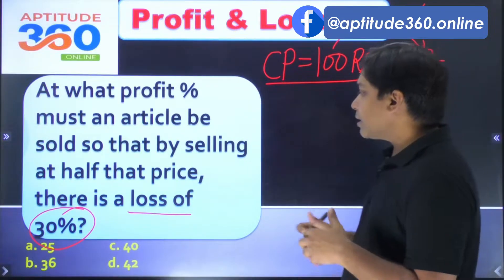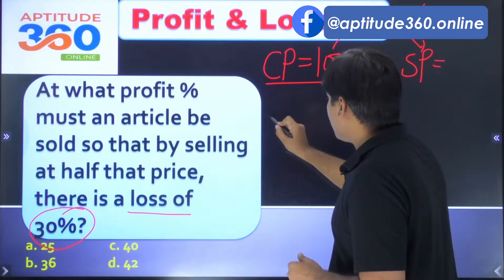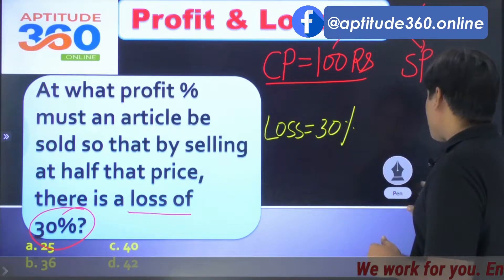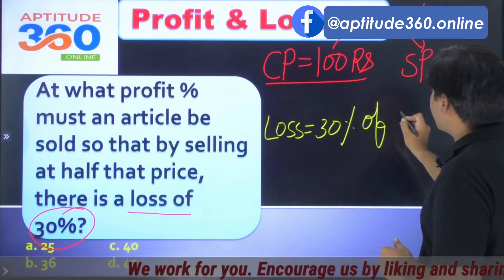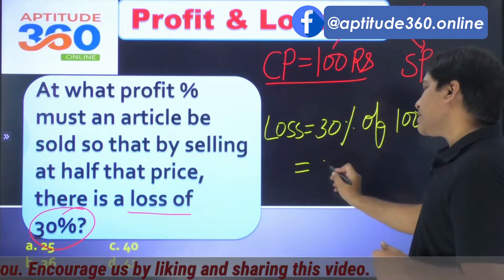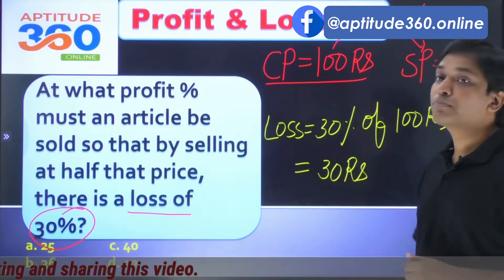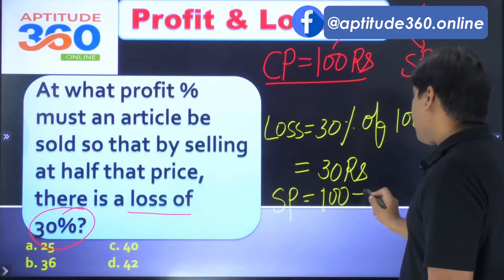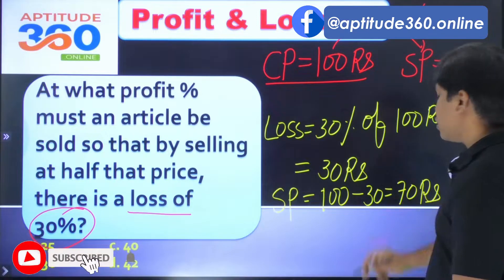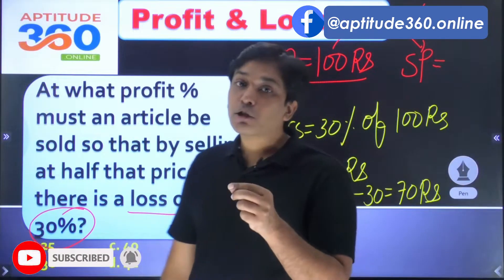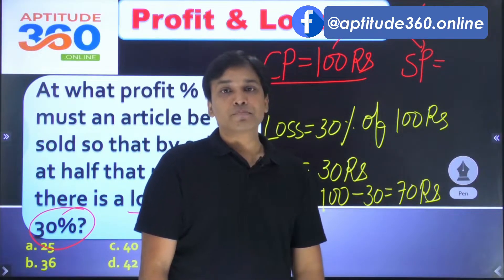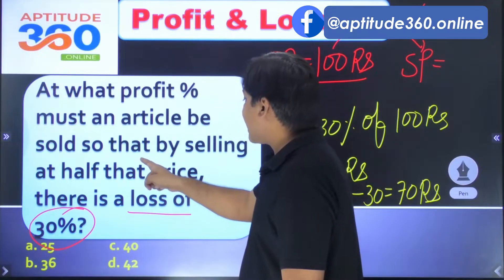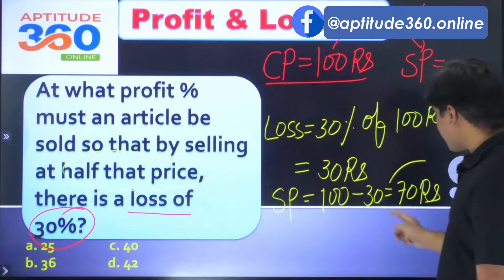In the second scenario, if I sell the product at thirty percent loss: loss is thirty percent of the cost price, which is 100 rupees, so my loss comes out as thirty rupees. If loss is thirty rupees, the selling price would be cost price minus loss, which is seventy rupees.